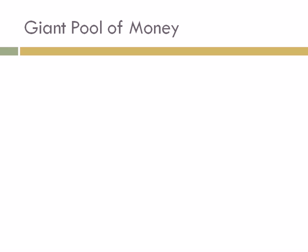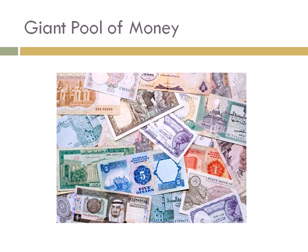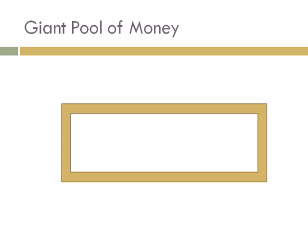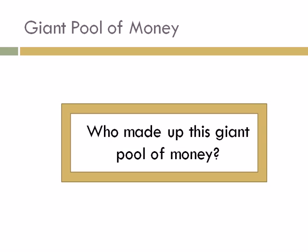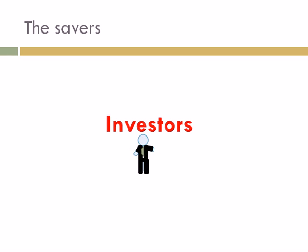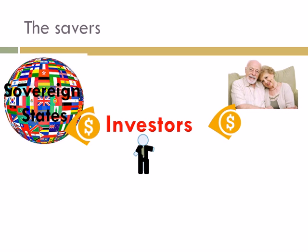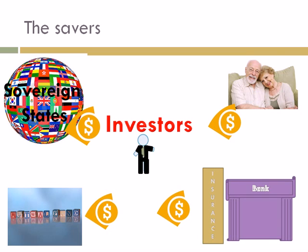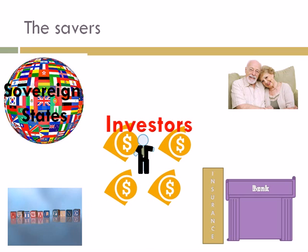What this refers to is an international pool of money saved by corporations and organizations who were looking for a safe and secure place to put their investments. Who made up this giant pool of money? It was a variety of individuals and organizations looking to do something with their assets. These included states, retired people, mutual funds, and insurance companies and banks. They gave their money to investors in the form of funds.